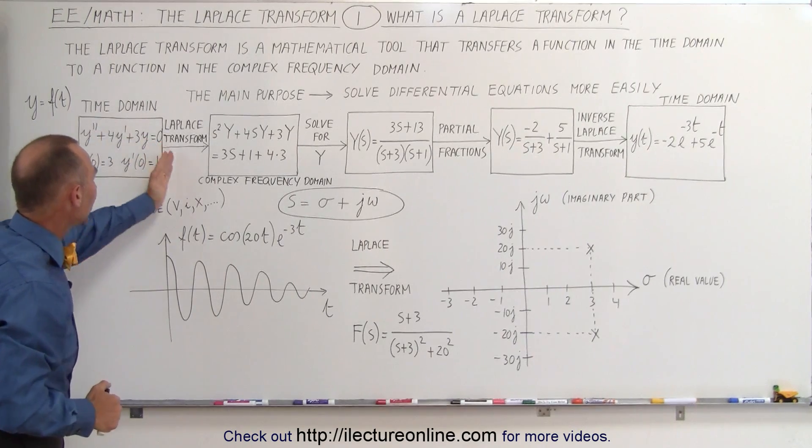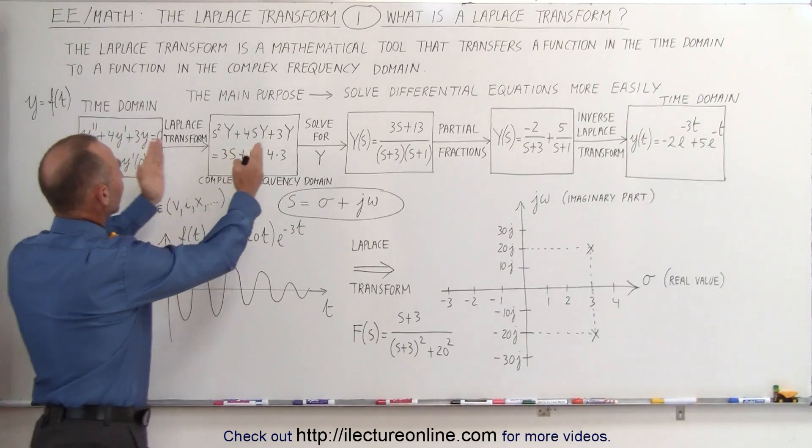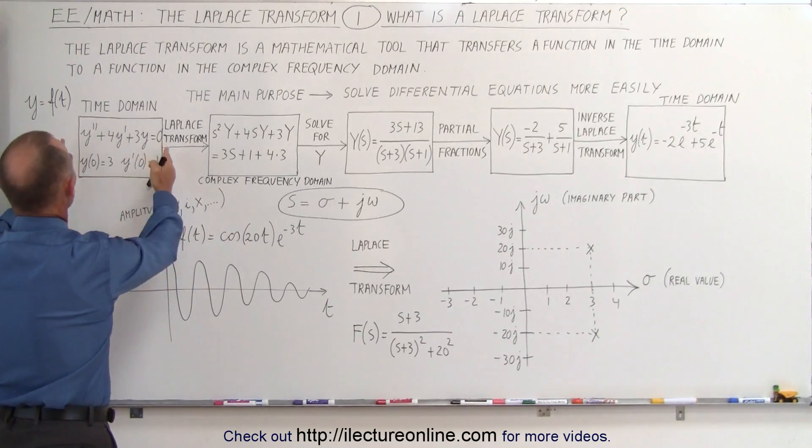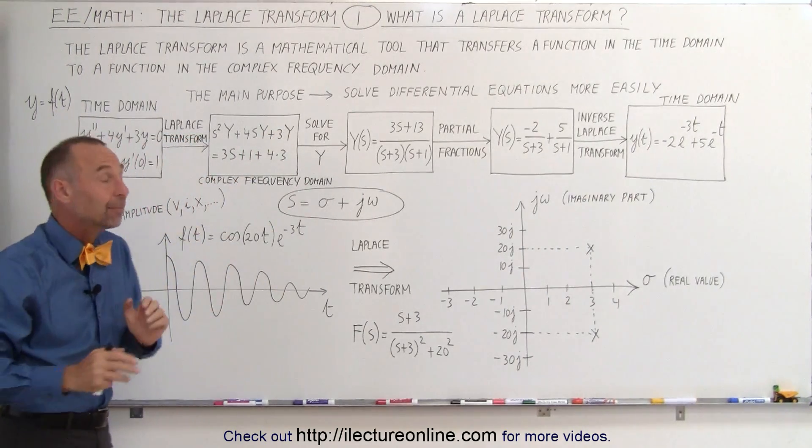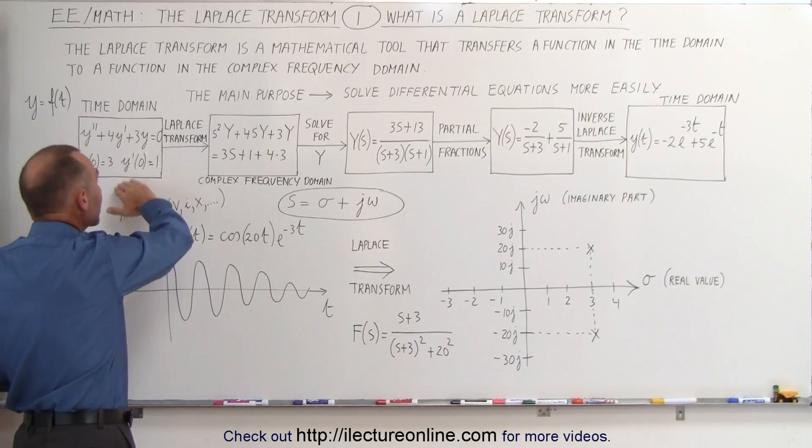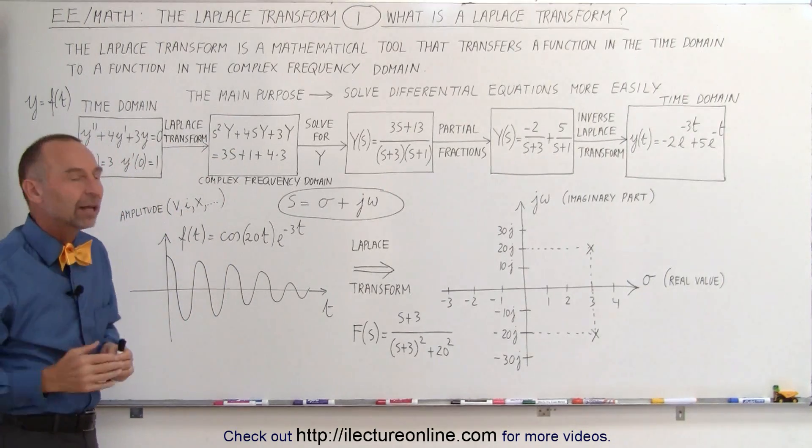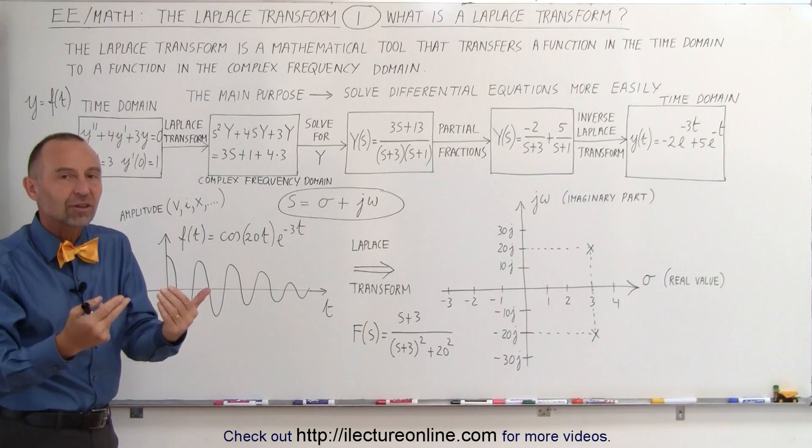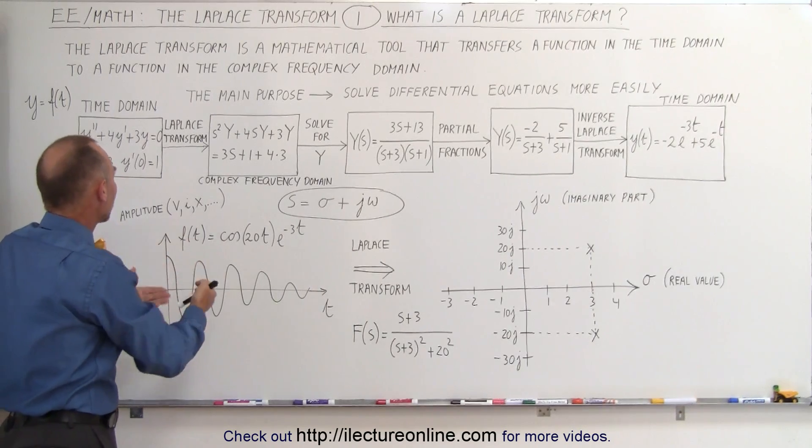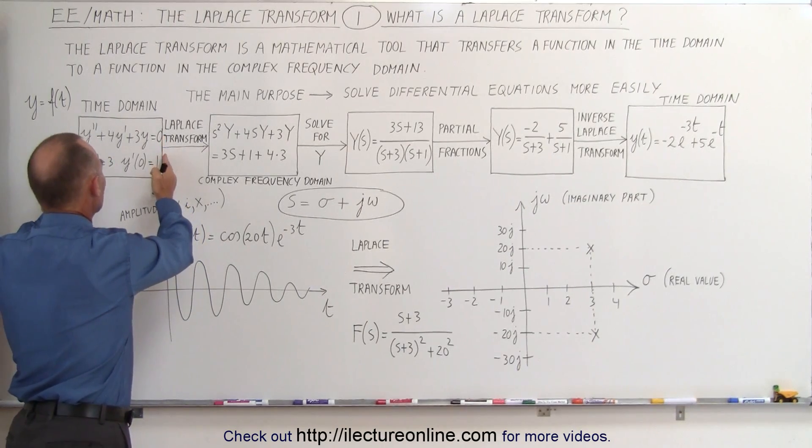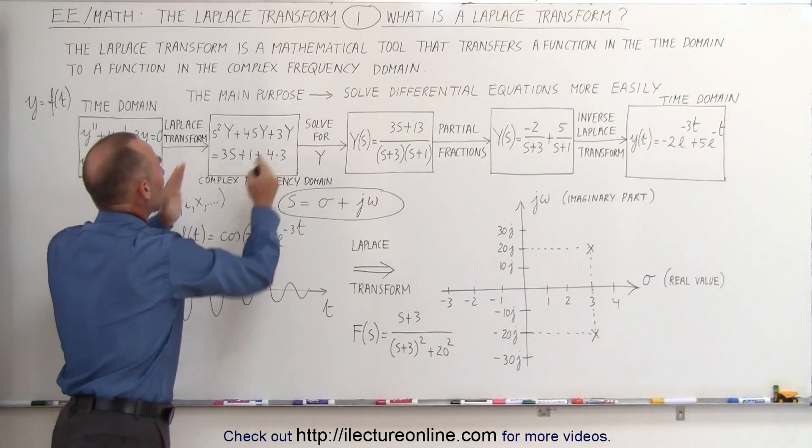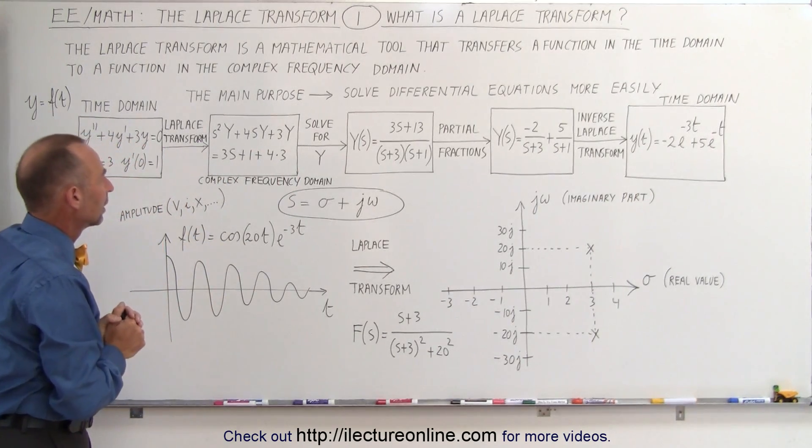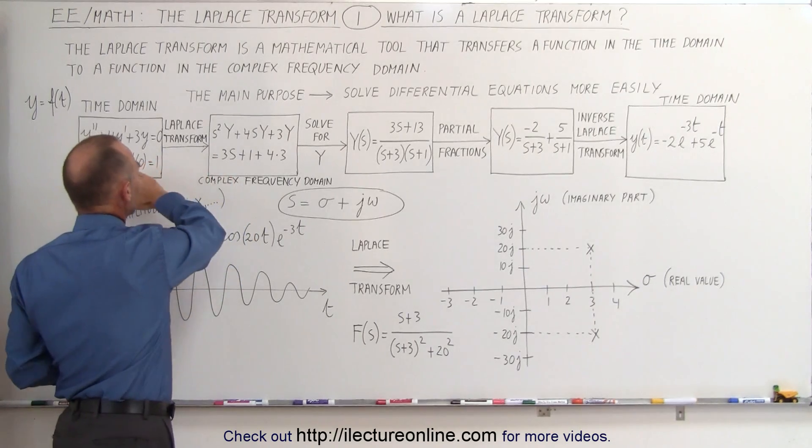Then we do a Laplace transform. This function will not look like this. Here it's a function of the variable t. Here it's a function of the variable s. I'm not showing you yet how we get from here to here. We'll see that on some later videos. The actual process of taking the Laplace transform, taking a function here, that's a function of time, to a function of a complex frequency domain.